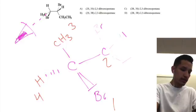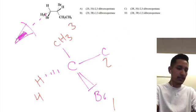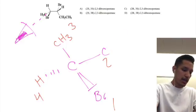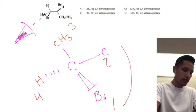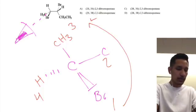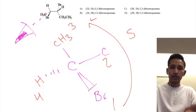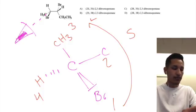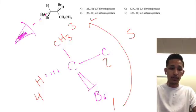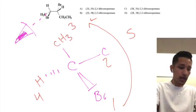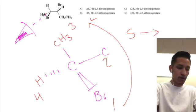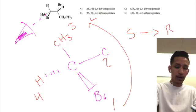Now we do our neat little trick where we do counterclockwise and clockwise. We start at one, two to three — that would be counterclockwise, so that's S. However, we did a reversal of the fourth priority, so what this means is we're going to have to also reverse our answer. So instead of S, we're going to get R.